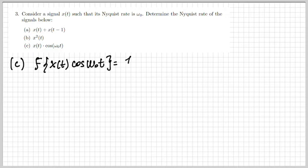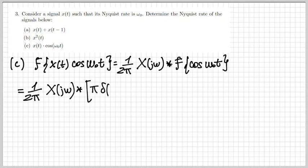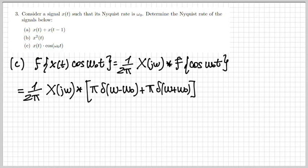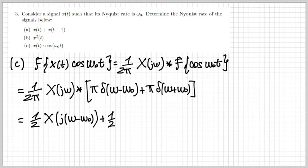Now case c: the signal is x(t)·cos(ω₀t). The Fourier transform is X(jω) convolved with the Fourier transform of the cosine. The Fourier transform of a cosine is two deltas centered at +ω₀ and −ω₀. Convolving with deltas produces shifts, so the result is (1/2)X(j(ω−ω₀)) + (1/2)X(j(ω+ω₀)).